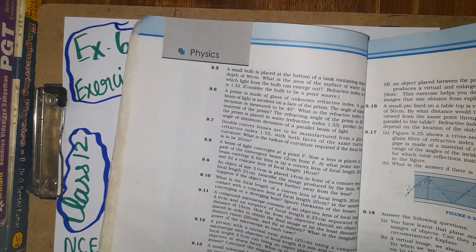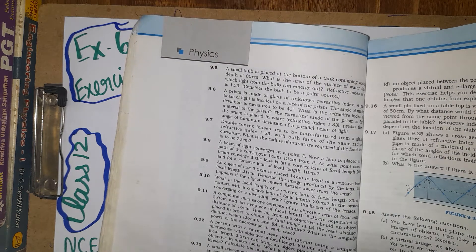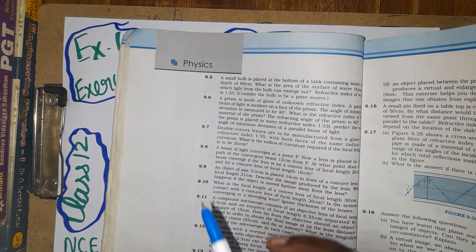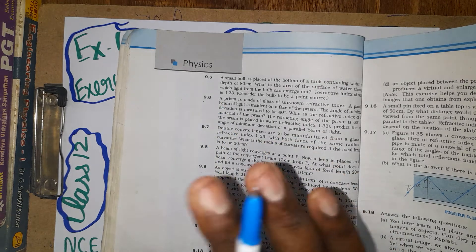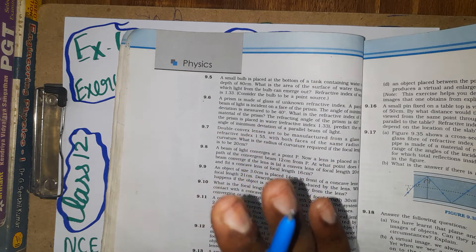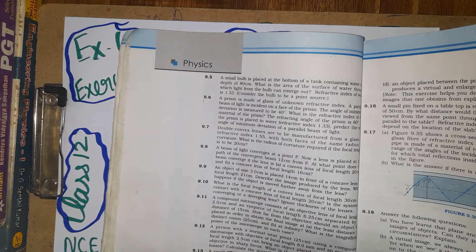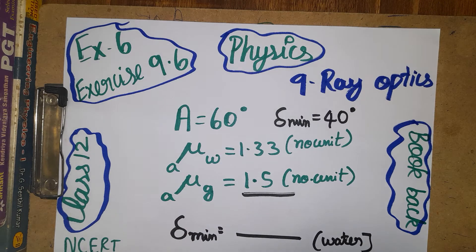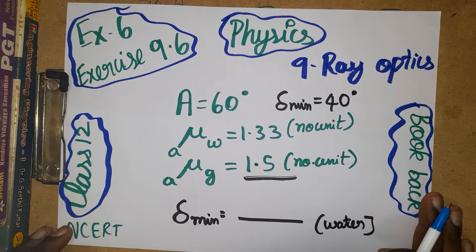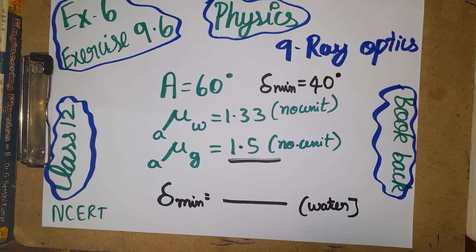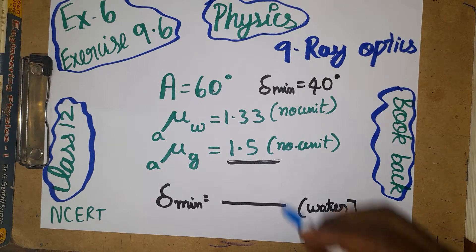Today we are going to discuss Class 12 Physics NCERT exercise problem — Chapter 9, Problem 6. This question is based on the prism, from the ray optics topic. We are going to see how to find the solution for this question.